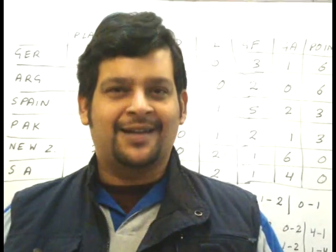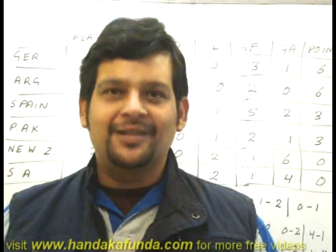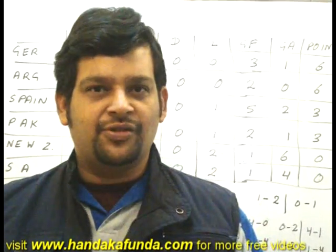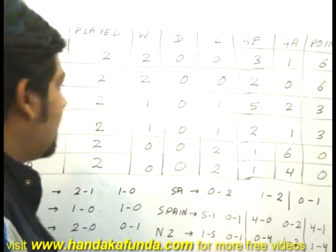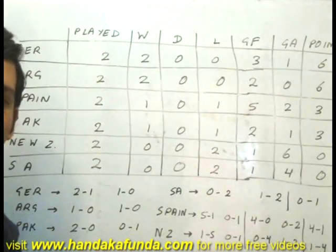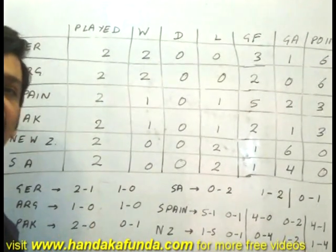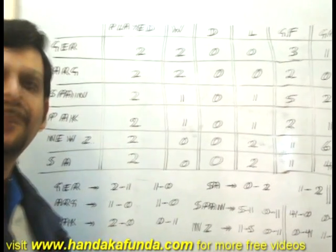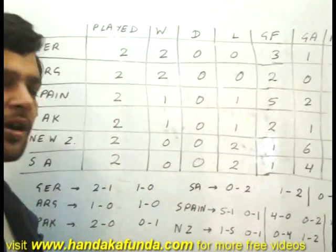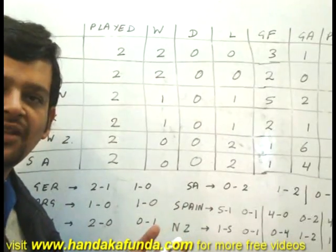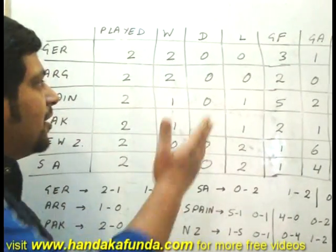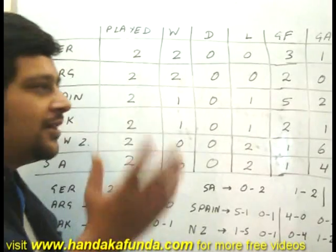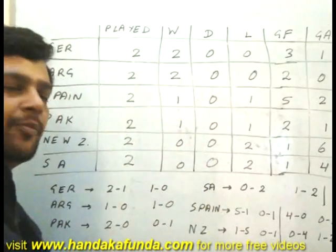Hello and welcome to Handa Ka Fanda. This is in response to Khurram's query on my Facebook page. As Khurram had asked, as you can see this is a long table. This is a question from previous year's CAT papers. These types of questions are very popular in which they talk about hockey matches and football matches where they consider goals scored, points, and stuff. Let us look at this data in a little more detail.